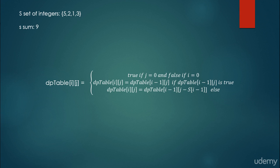By the way, these are the equations. The DP table at position [i, j] — where i is the row index and j is the column index — stores true or false, because we are trying to find whether it is possible to construct the target sum from the set integers. The answer is yes or no, so we store true and false rather than integers or doubles.